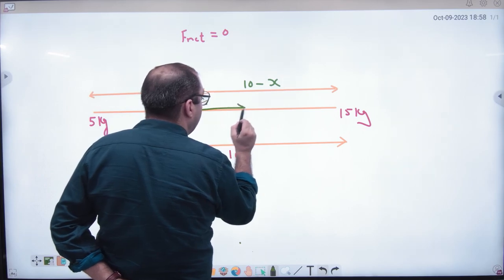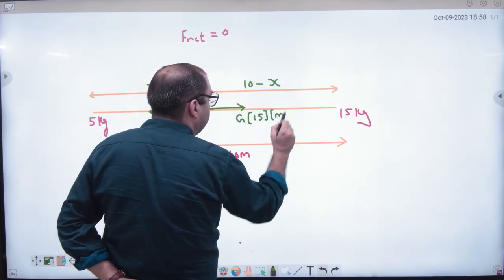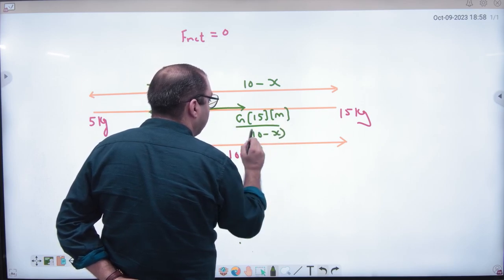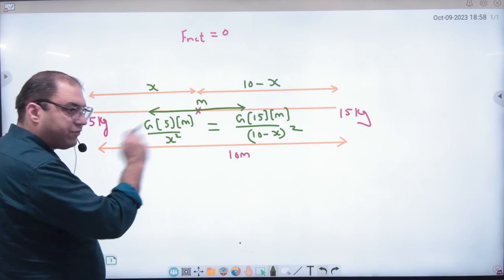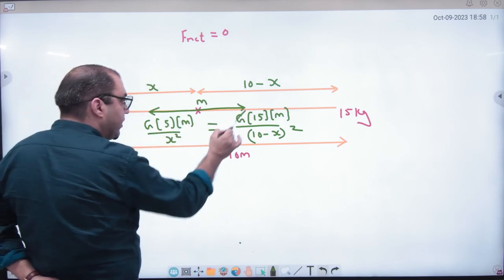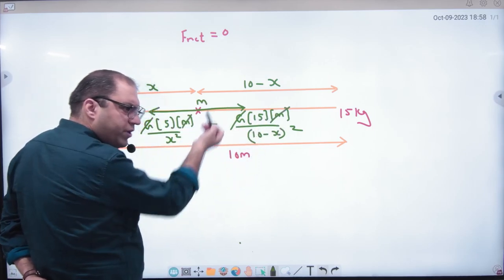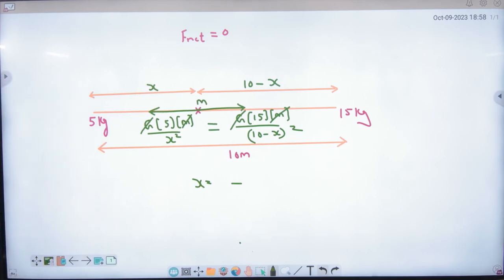Similarly 15 kg will attract this M towards itself. 15 into M, divided by 10 minus x, whole square. To make net force zero, left and right forces must be equal. Without vectors it won't happen. Because whether to subtract two vectors or add them, that will be with direction. Clear?